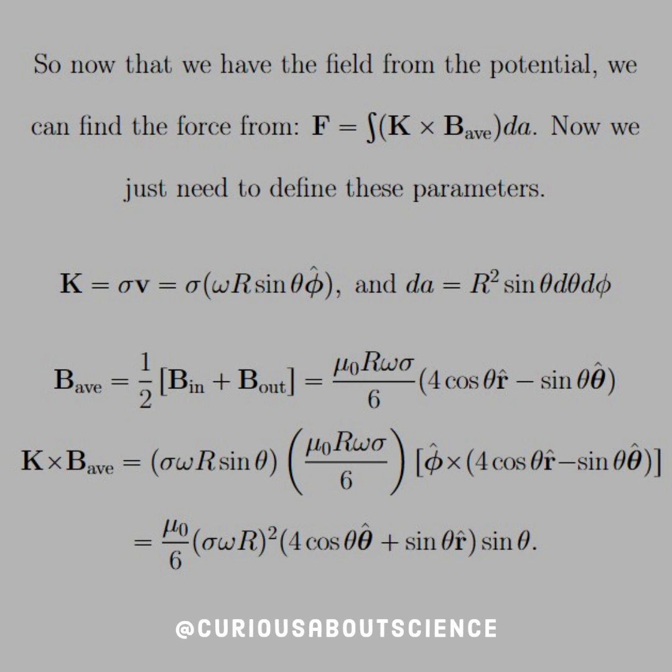And then B average is a result from Laplace's equation and other things in the theory. One-half B in plus B out. Pushing this through, we add them together, and then we take their cross product, and we end up with μ₀ over 6 times σωR² times 4 cosine θ θ̂ plus sine θ r̂ sine θ.